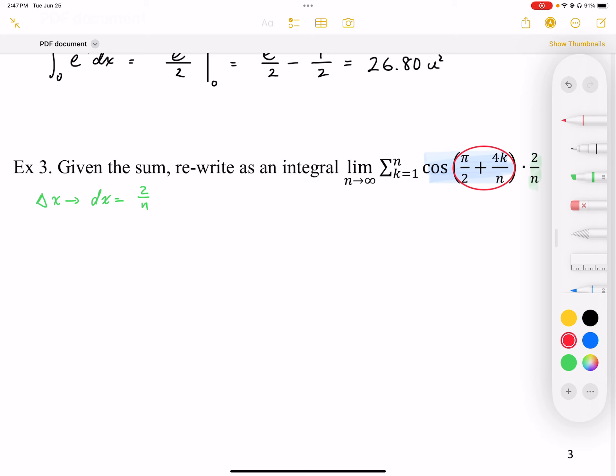And I can see that x is going to change as I increase multiples of my 2 over n. So what I can do is I can rewrite this expression like this. I have the cosine of pi over 2 plus groups of 2 over n, so I'm going to write that in.